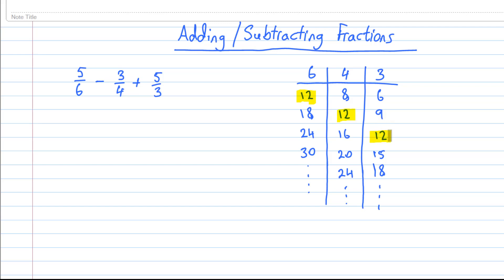And in this case it's 12. So what we have to do, going back to our question, we have to multiply each fraction above and below by some number that will turn the denominator into 12. So starting with 5 over 6...